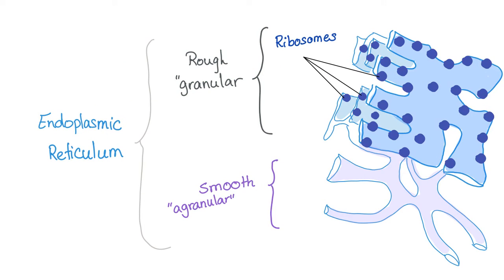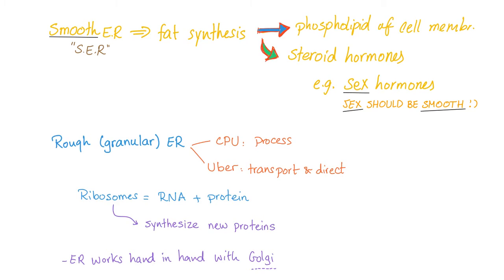Here is the endoplasmic reticulum. It has the rough or granular endoplasmic reticulum and the smooth or agranular. The rough has ribosomes; the smooth doesn't have any ribosomes. The smooth endoplasmic reticulum handles fat synthesis, such as phospholipids of the cell membrane, as well as steroid hormones.